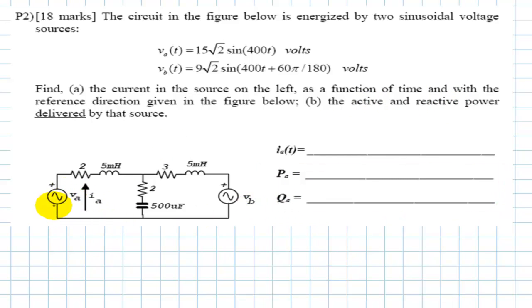We take this problem to the phasor domain. We represent the sources Va and Vb by phasors. The phasor Va has an RMS value of 15 volts with 0 degrees, and Vb has an RMS value of 9 volts with a phase of 60 degrees.